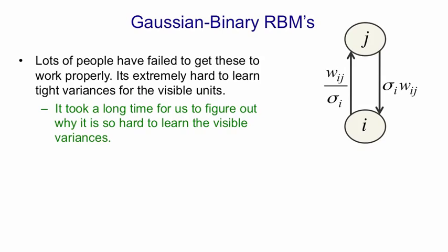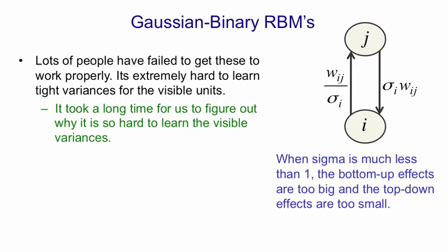So when the standard deviation of a visible unit i is very small, the bottom-up effects get exaggerated and the top-down effects get attenuated. The result is that we have a conflict where either we have bottom-up effects that are much too big or top-down effects that are much too small. The hidden units tend to saturate and be firmly on or off all the time, and this will mess up learning.